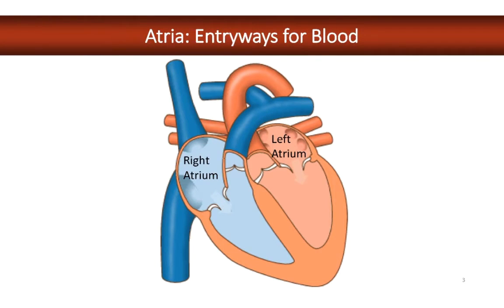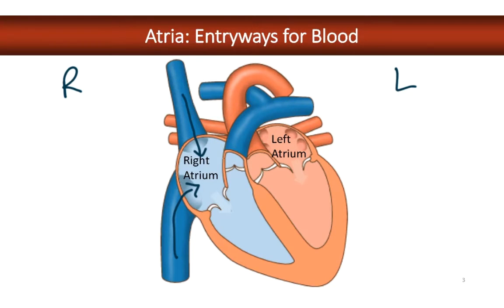So, structure of the heart. We talked about the superior and inferior vena cava — they return blood from systemic circulation into the right atrium. Remember, when you're looking at the front of a structure, left and right are reversed compared to your own body. The blood that enters the left atrium comes from the four pulmonary veins. Atrium is a general term for an entryway.